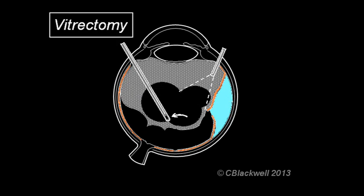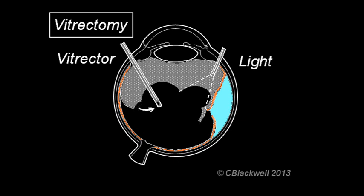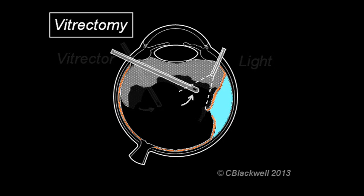Here we are in the middle of a vitrectomy surgery. I am showing two instruments inside the eye. On the left is the vitrector, an instrument that takes little bites of vitreous jelly and sucks them out of the eye. On the right is a fiber optic light that illuminates the inside of the eye so you can see what you are doing. Removing the vitreous directly removes the vitreous traction.